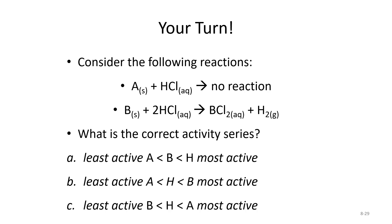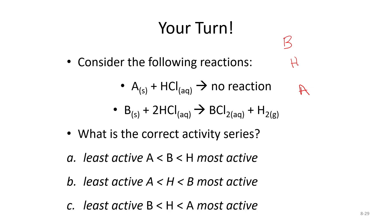Consider this: A plus HCl gives no reaction, but B plus HCl gives BCl₂ and H₂. What is the correct activity series? A could not bump out H, so A is lower than H. B was able to bump out H, so B is higher than H. Therefore, from least to most active: A, then H, then B.